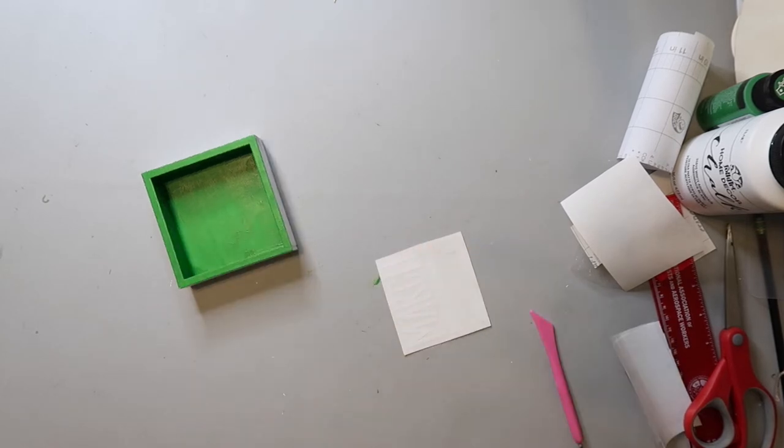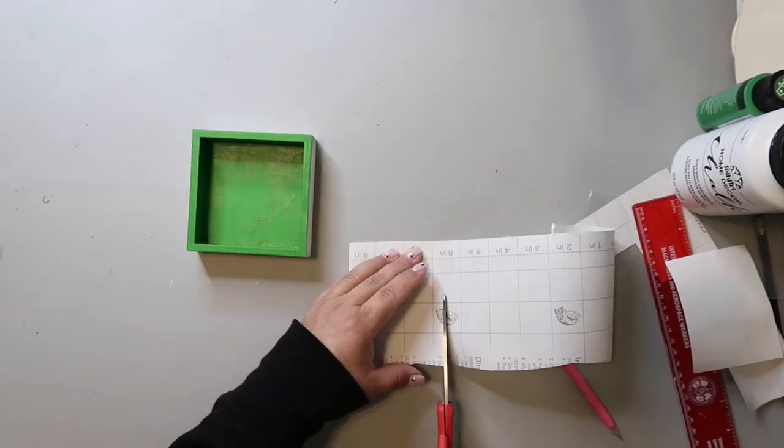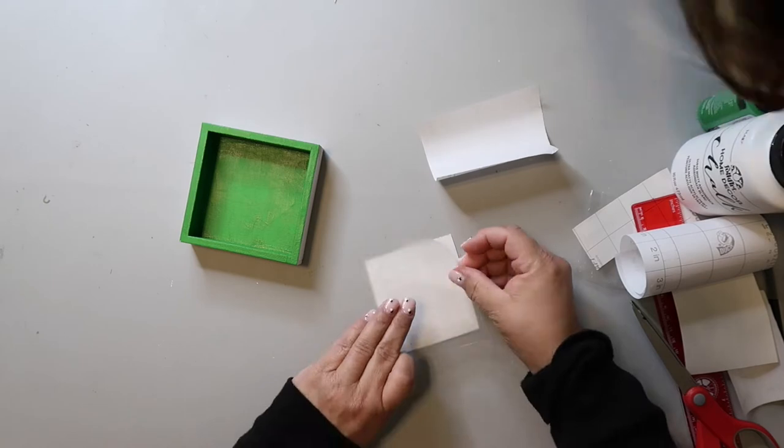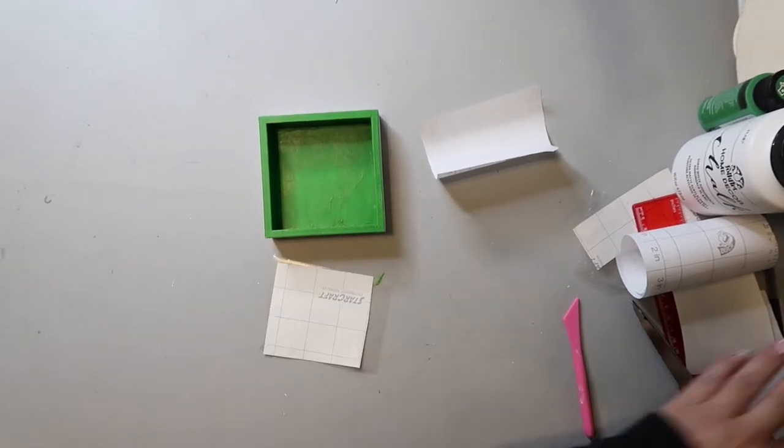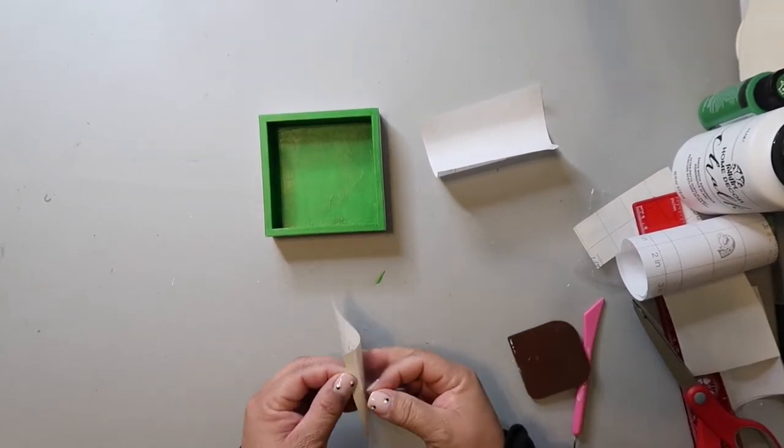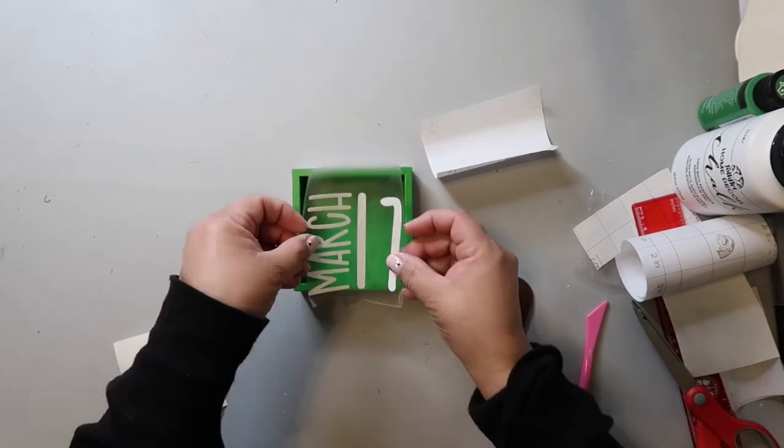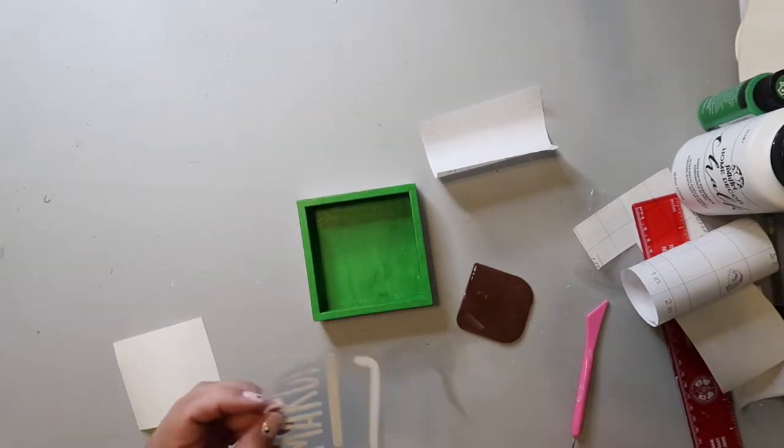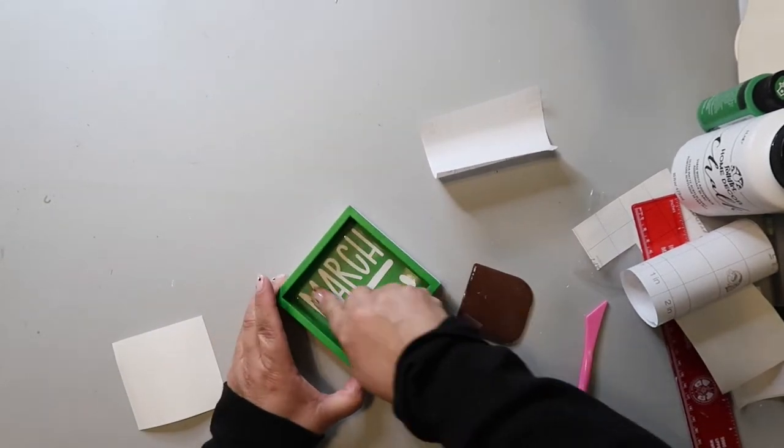I did use my Cricut to cut out a decal that said March 17th, and I'm just weeding it out and putting on transfer tape, and then I'll transfer it to the little box. You could also either use a fine tip paintbrush and some white paint or a paint pen and do the same thing.